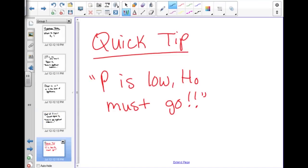So just a quick tip: if P is low, H₀ must go. If you can remember that, you'll do just fine in hypothesis testing.